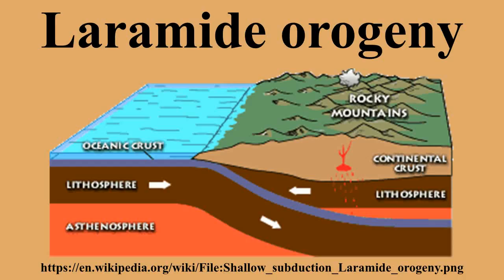The major feature created by this orogeny was deep-seated thick-skinned deformation, with evidence of this orogeny found from Canada to northern Mexico, with the easternmost extent of the mountain building represented by the Black Hills of South Dakota. The phenomenon is named for the Laramie Mountains of eastern Wyoming.